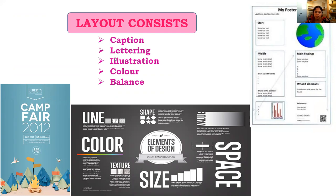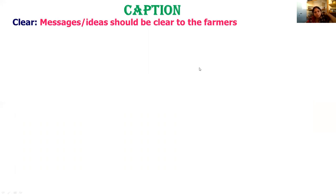The layout consists of five important points: caption, lettering, illustration, color, and balance. For captions, the message or idea to be conveyed to the farmers through the visual aid should be very clear. The caption itself should not be complex, so that viewers will engage with the visual aid.